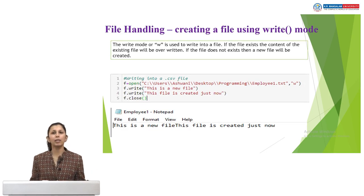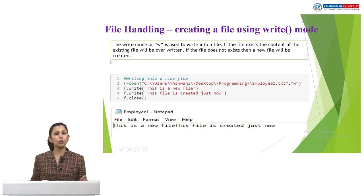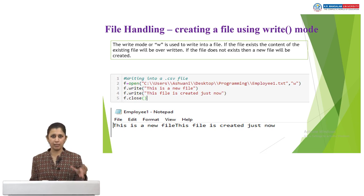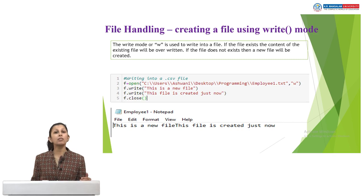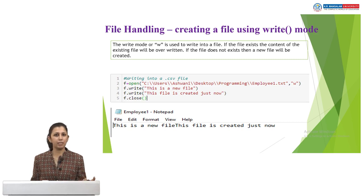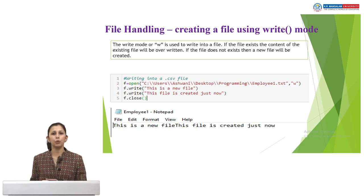If I want to write something into my file, I will use mode W — the write mode. The write mode is used to write data inside the file. If that file already exists, it will simply overwrite the data. Or if the file does not exist, then it will create a new file and then start writing the data inside it.